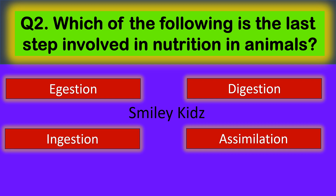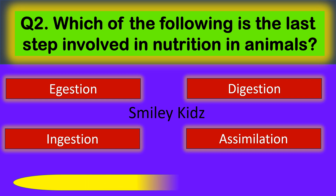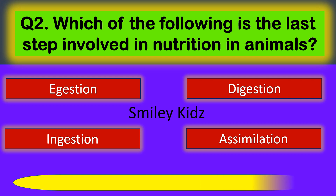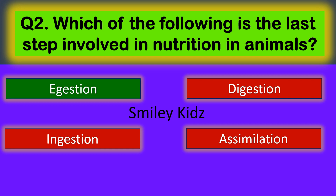Question number 2. Which of the following is the last step involved in Nutrition in Animals? Your options are Adhesion, Digestion, Ingestion, and Assimilation. The correct answer is Egestion. Egestion is the last step involved in Nutrition in Animals.